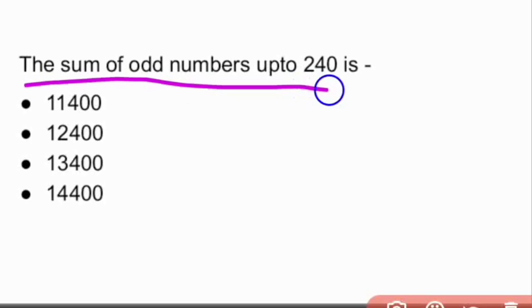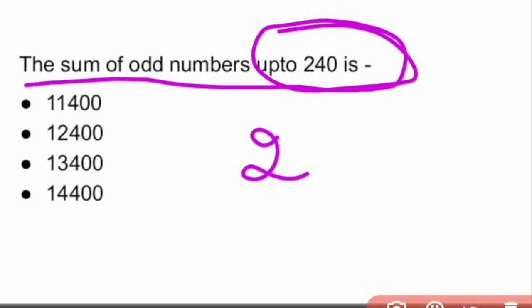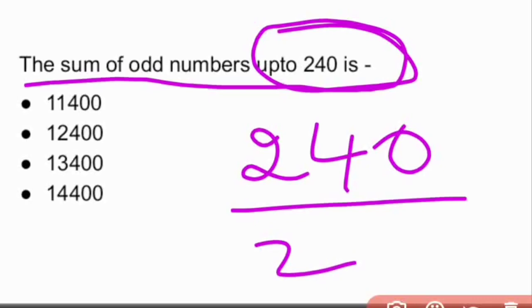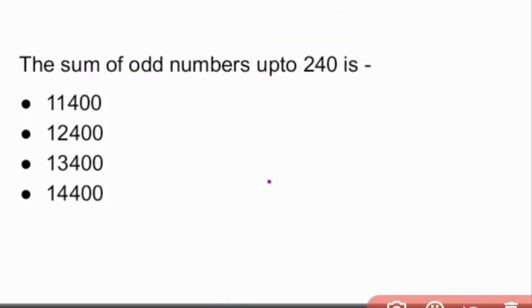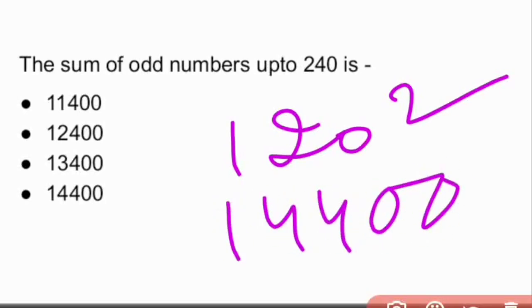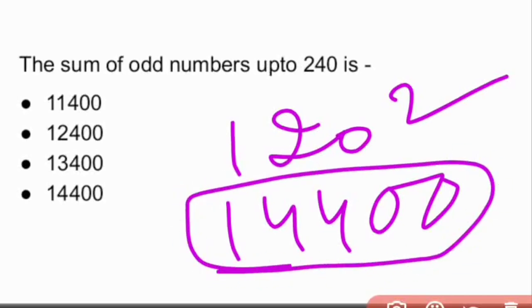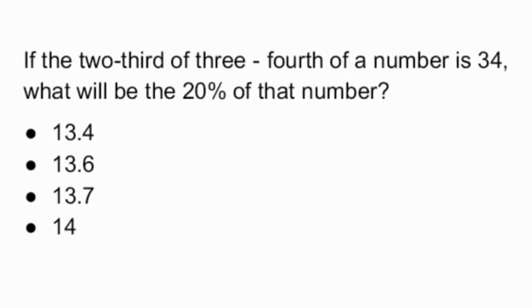The sum of odd numbers up to 240. Since these are odd numbers, 240 divided by 2 gives us 120 odd numbers. We have a formula: sum of odd numbers is n². So n is 120. 120 square equals 120 × 120, which is 14,400. So our answer is 14,400.